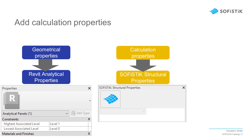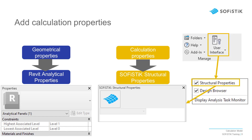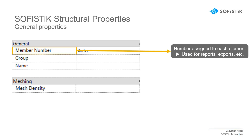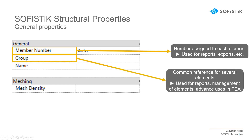This menu can be opened from the Sophistic Analysis menu under User Interface. Some of these properties are not specific to the type of element. Each member will have a number, which will be used for outputs and exports. Objects can be assigned to a Group, which allows for further management, especially if the model is later used in Sophistic FEA.